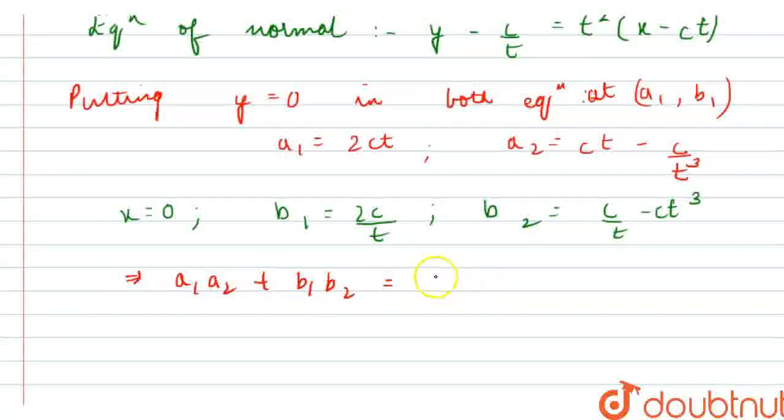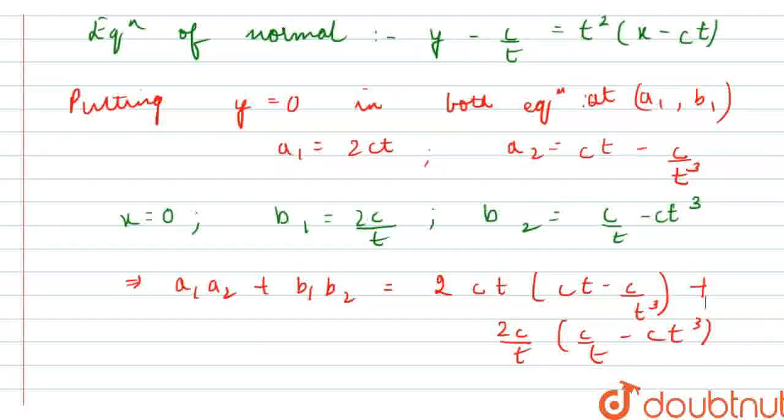Putting the values, what I get? I get 2ct if I will be taking it common. So, in the bracket it would be ct minus c upon t cube plus 2c upon t into c upon t minus ct cube. So, this is the value of a1a2 plus b1b2. I hope this is correct. This is clear. Thank you.